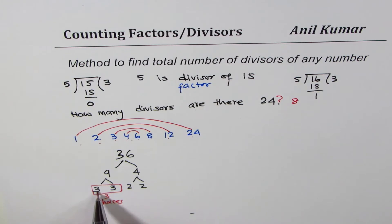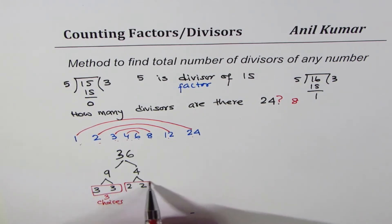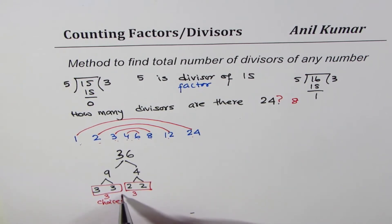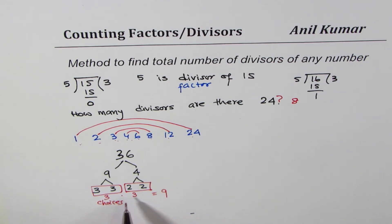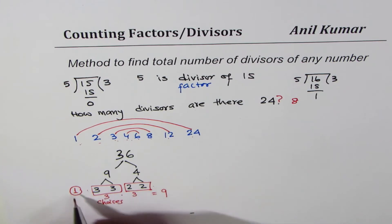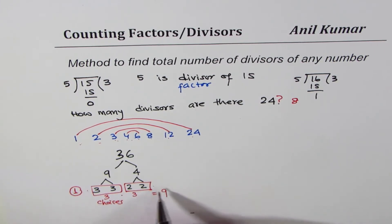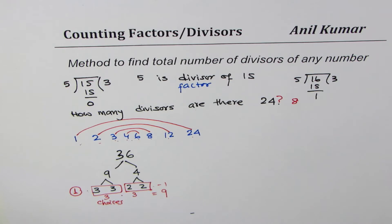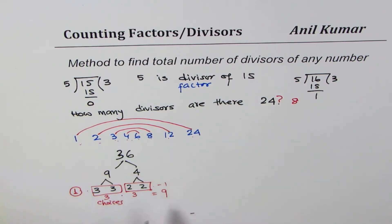The three choices for the 3s are: take one 3, take both, or take none. Similarly with the two 2s we have three choices. So total number of choices is 3 times 3, which is 9. You might note that taking none of either gives us 1, and 1 is always a factor or divisor, so it fills in perfectly. Therefore 36 has 9 divisors.